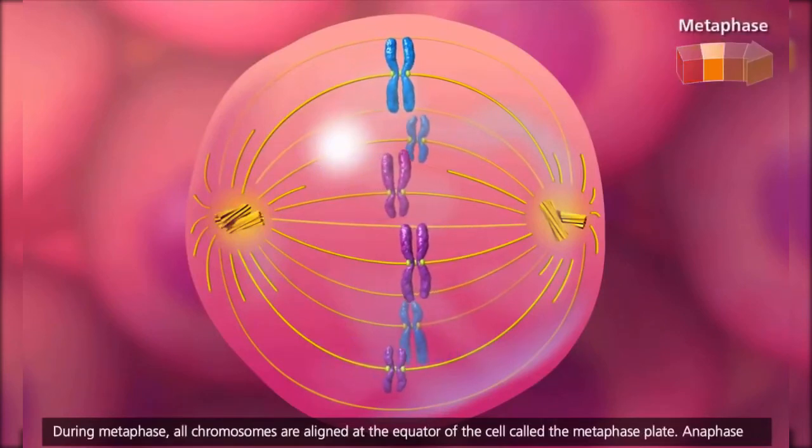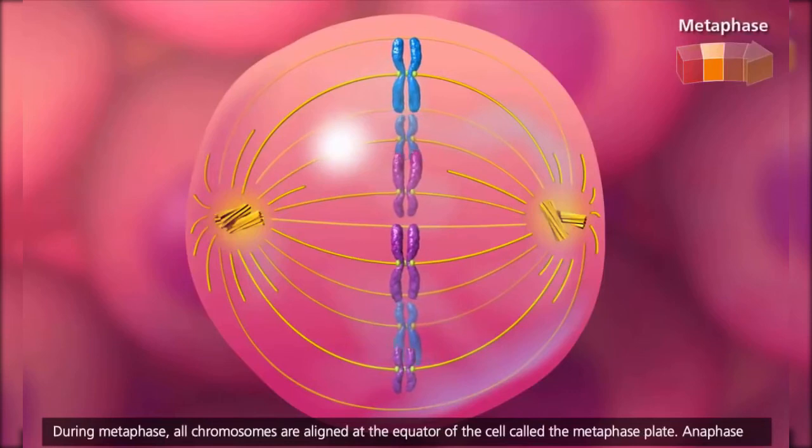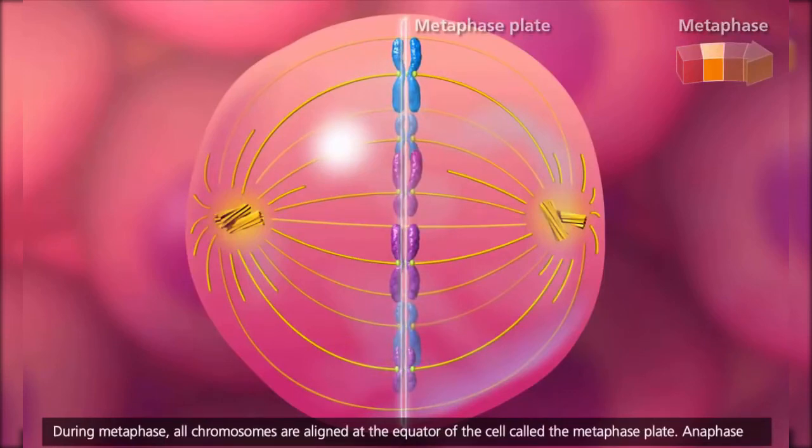During metaphase, all chromosomes are aligned at the equator of the cell, called the metaphase plate.